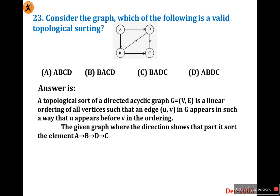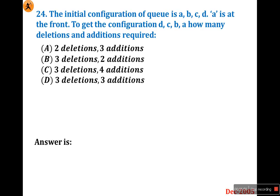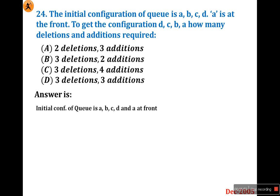It is a very simple question. If you understand topological sorting you can answer it easily. Next question: The initial configuration of a queue is A, B, C, D where A is at the front. To get the configuration D, C, B, A — how many deletions and additions are required? This is a very interesting question.